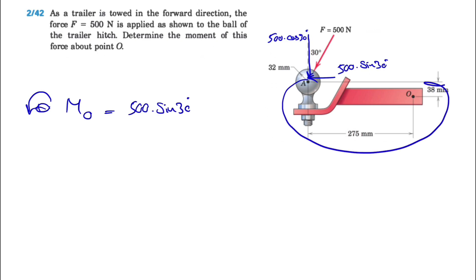We have a positive sign, and we have the moment of the y component, which was 500 times cosine of 30 degrees. This will be in this direction, so again counterclockwise, so positive.